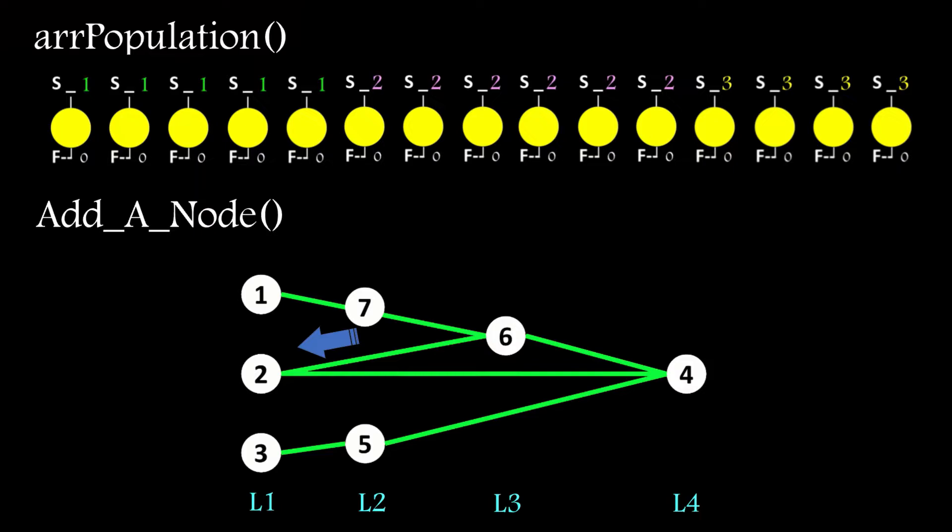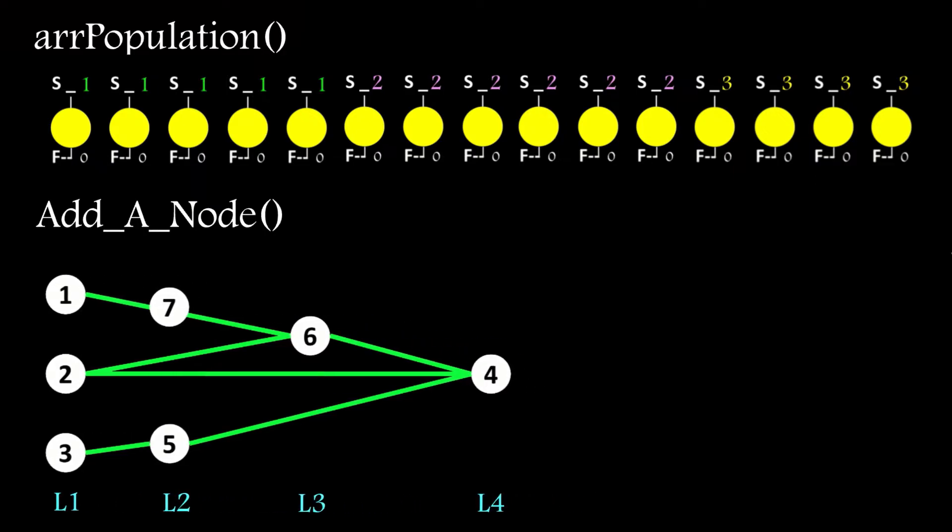For each hidden node in the node array, I go to the connection array, and look for all connections that terminate at that node. And I follow those connections back to the input layer, keeping a note of the longest path found. Here, for example, node 7 is one step back to the input layer, so it's in layer 2. It's the same for node 5, which is also in layer 2. Node 6 has two paths back, the longest of which is two steps, so it must belong in layer 3. And the output nodes are set to the maximum hidden node layer, plus 1, so node 4 is in layer 4.